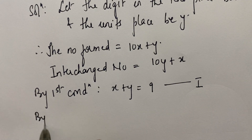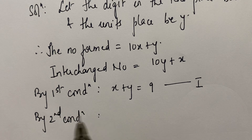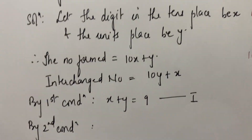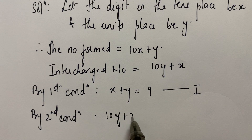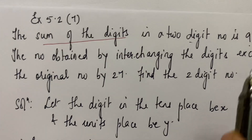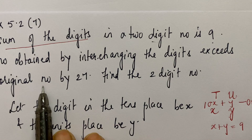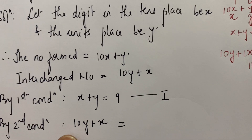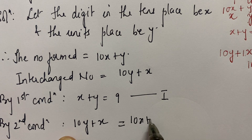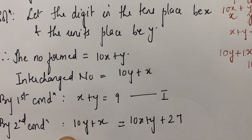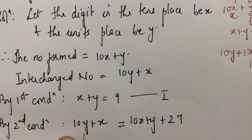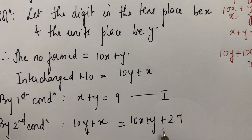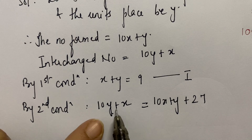By the second condition, the number obtained by interchanging the digits — which is 10y plus x — exceeds the original number by 27. This interchanged number is exceeding the original number by 27. So the number obtained by interchanging the digits exceeds the original number, which is 10x plus y, by 27.